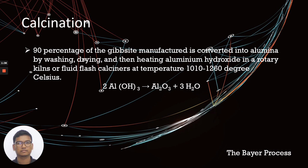For the last step, calcination. As you can see, 90 percent of the gibbsite manufactured is converted into alumina by washing, drying, and then heating aluminum hydroxide in a rotary kiln or flash calciner at temperatures of 1010 to 1260 degrees Celsius. I think that's all from me now. Let's move to the next part.